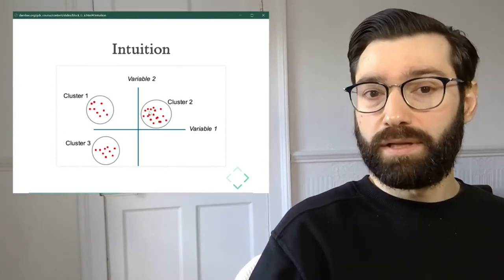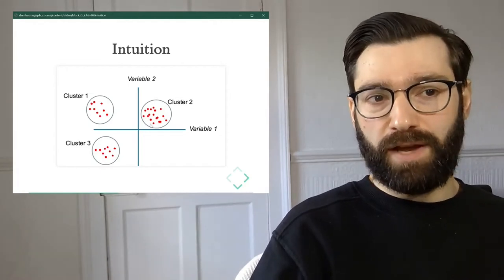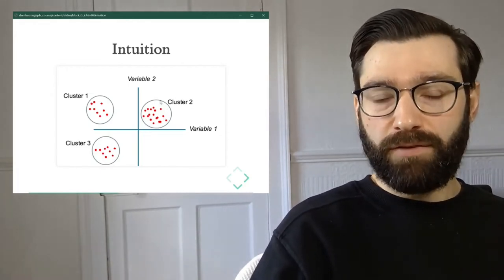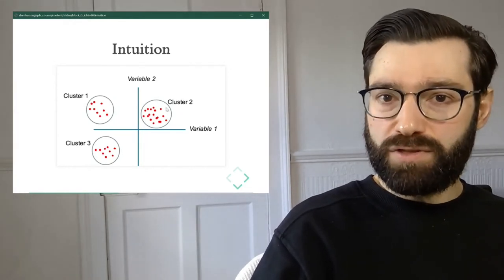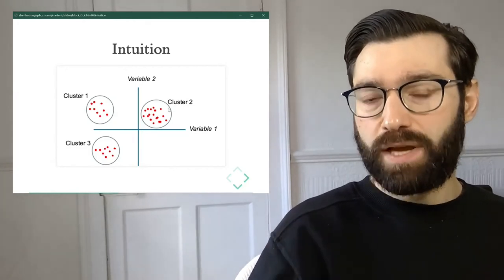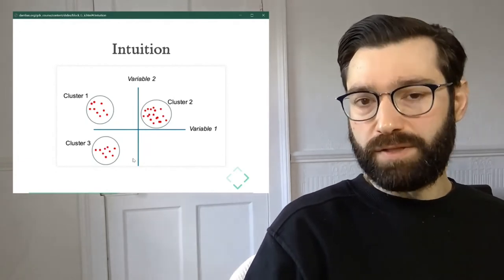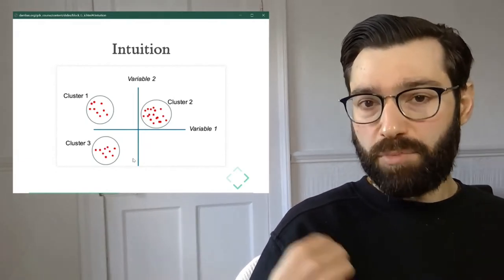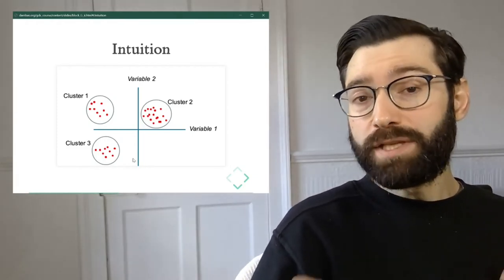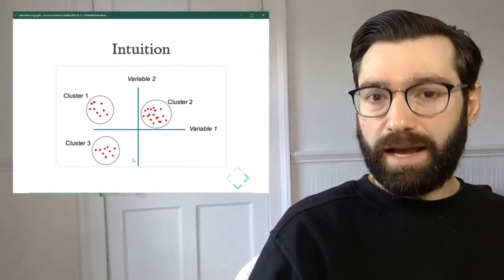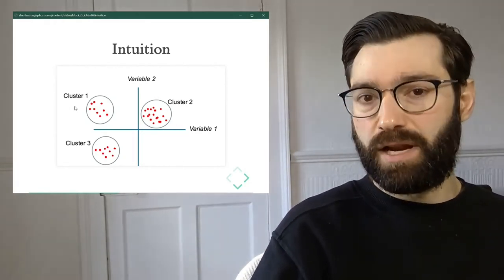We're going to have the algorithm parse through the data and identify these sorts of associations between different observations and different values and different variables. And the algorithm will be able to use those to generate this categorization or classification into different types. So this is the intuition behind what the unsupervised learning algorithm is doing.